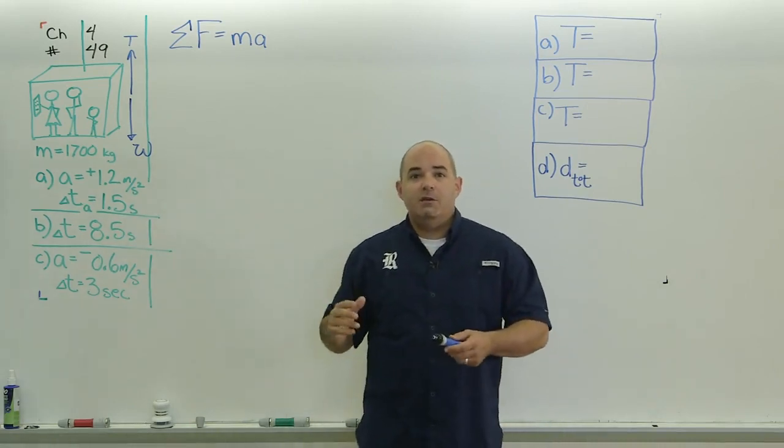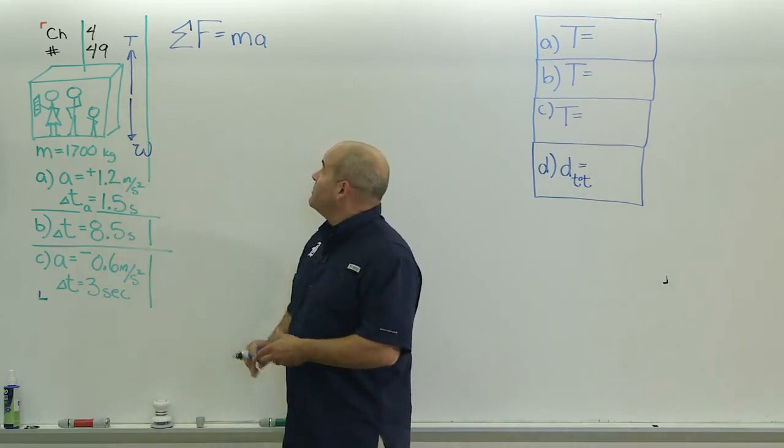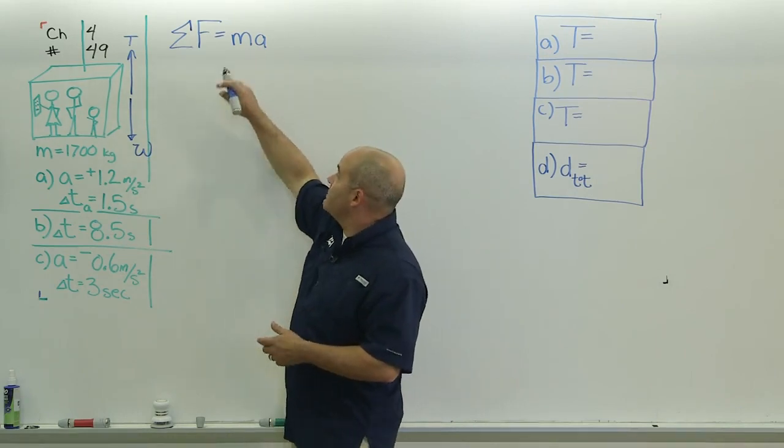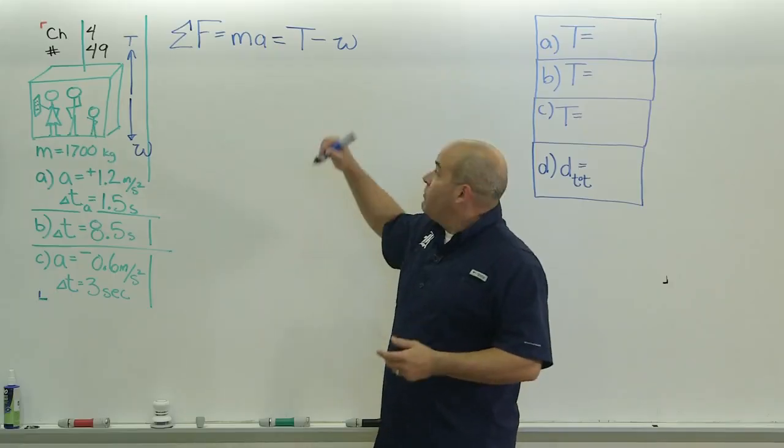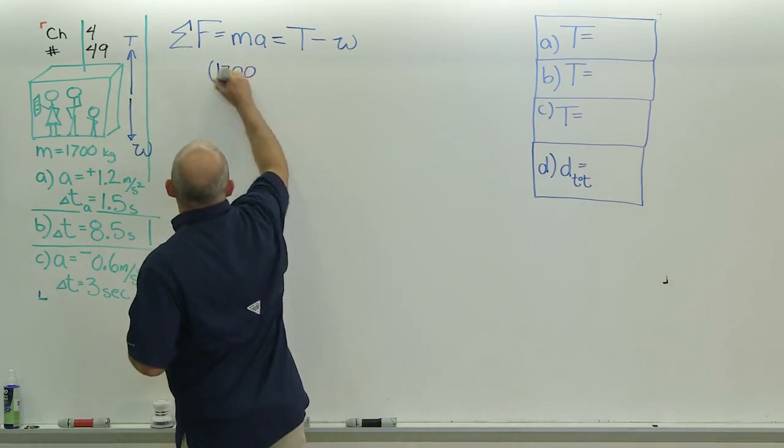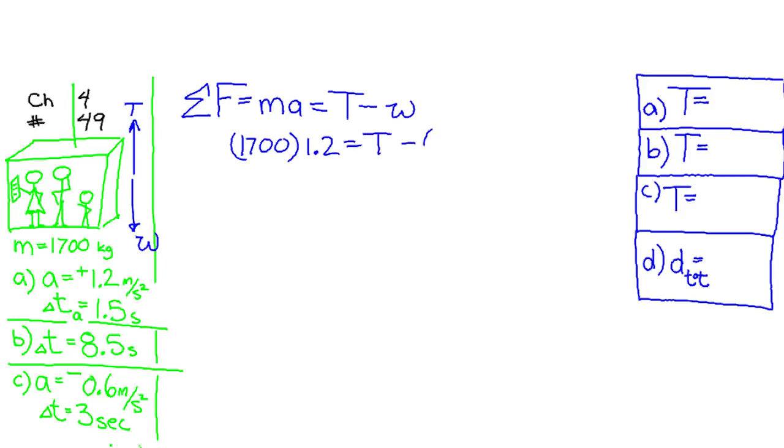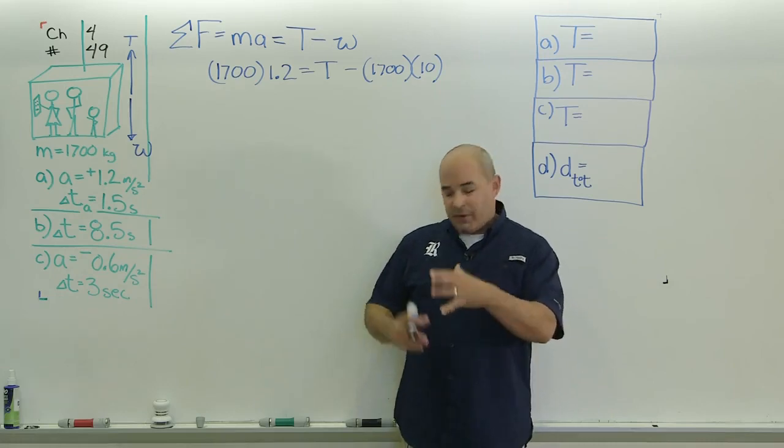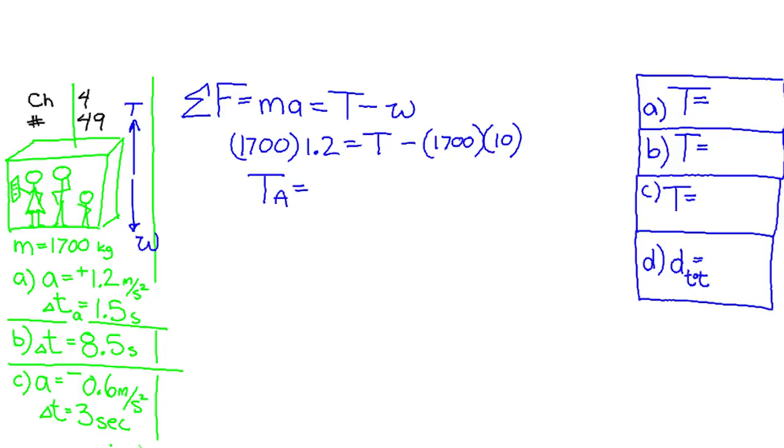I'm in the habit of always calling the up direction positive. So, I'm going to call the tension an upward force so it'll be positive. Weight will be negative in these problems. I go back to Newton's Second Law: the sum of the forces is how much the mass accelerates, and those forces actually are tension and weight. Tension positive because it's up, weight negative because it's downward. That's enough to solve part A. I plug in the mass, plug in the acceleration, and I use 10 for gravity. Throw it into my calculator and it turns out that the tension for part A is 19,040 Newtons.